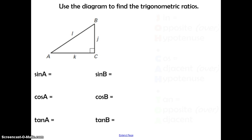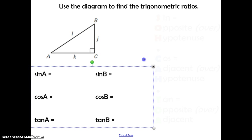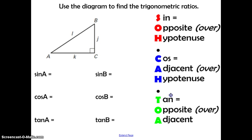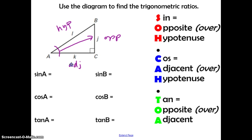Now we're going to use the diagram to find the trigonometric ratios — just a little practice. Start with SOHCAHTOA written on your worksheet. Looking at angle A first: from angle A's perspective, the side opposite the right angle is the hypotenuse, the side opposite angle A is the opposite side, and the remaining side is the adjacent. The sine of angle A equals the opposite over the hypotenuse, so that's side J over side L.